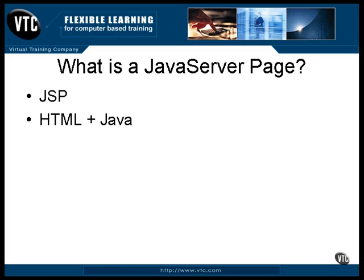There are two ways to look at a JSP page. You can think of it as an HTML page with executable Java code embedded in it — which it is. Or you can think of it as a Java CGI program that produces HTML, but the code that stays the same every time is written statically and surrounds the Java code — which it also is.